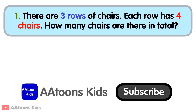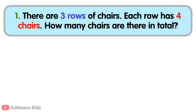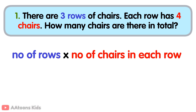To find the total number of chairs, we need to multiply the number of rows by the number of chairs in each row. Total number of rows is three. Total number of chairs in each row is four. Now, three multiplied by four is twelve. So, there are twelve chairs in total.